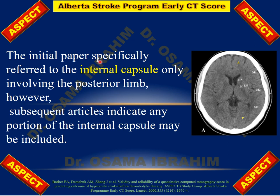The initial paper specifically refers to the internal capsule involving only the posterior limb. However, subsequently published articles indicate that any portion of the internal capsule — even the genu or anterior limb — can be considered in the calculation.